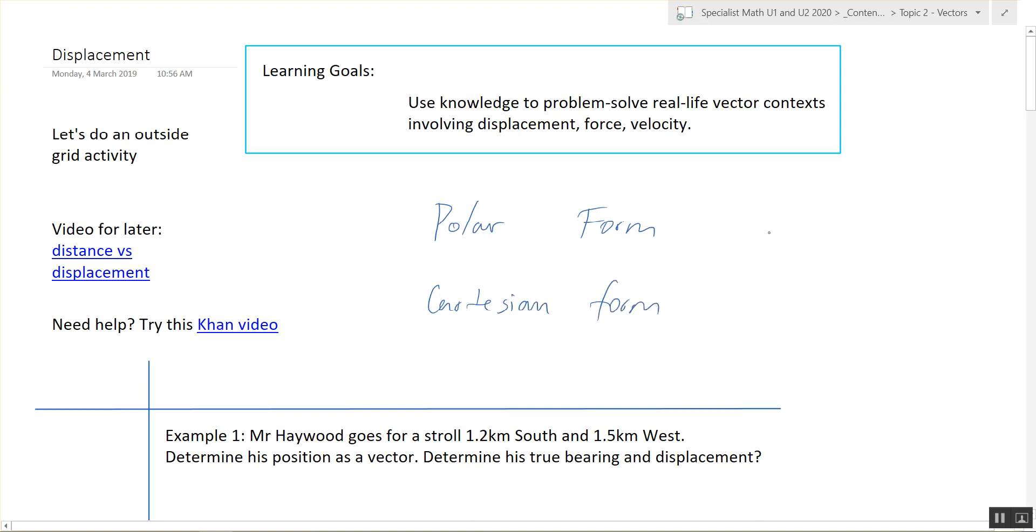Polar form has a magnitude and a direction. Cartesian form is split into the i and j components.